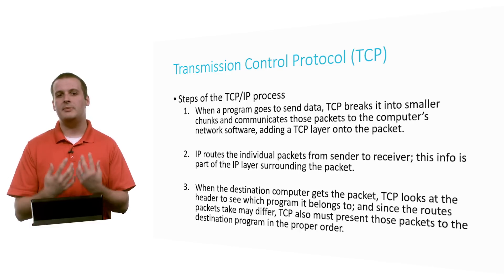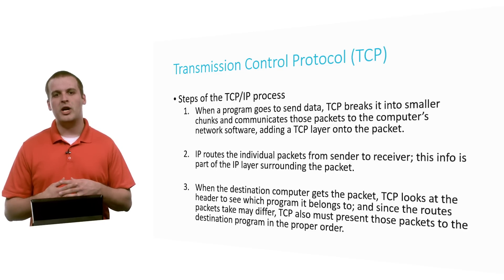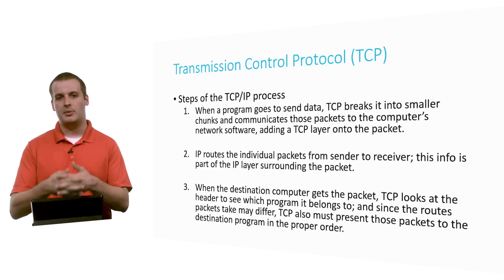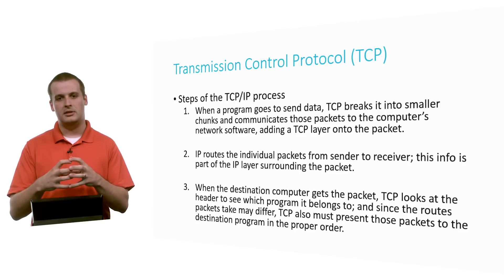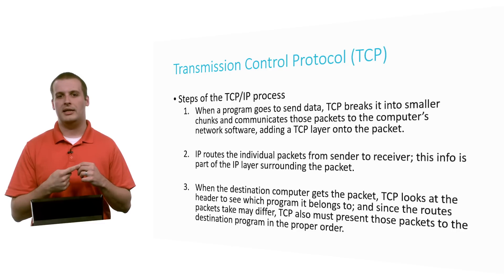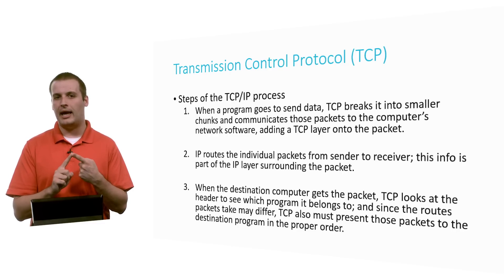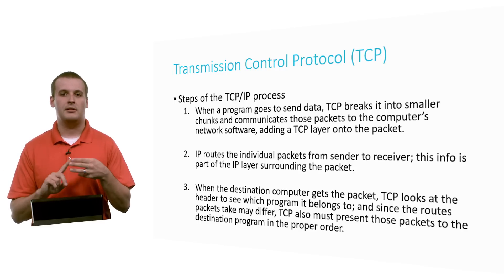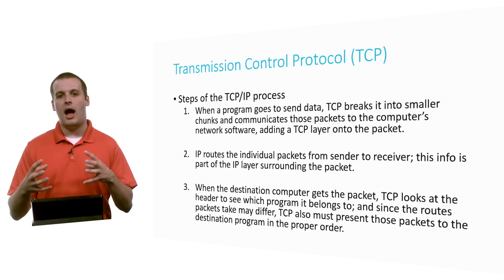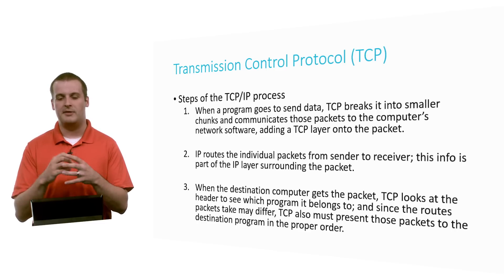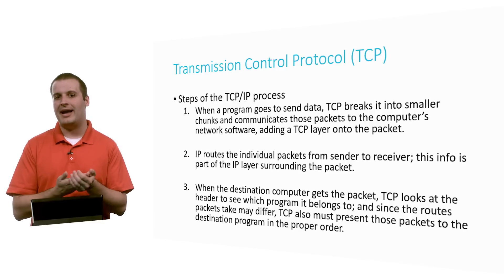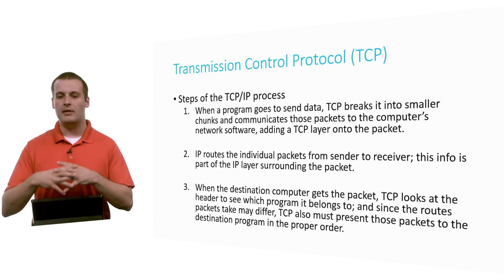So what's the TCP/IP process? When a program wants to send data, TCP helps break it into chunks and communicates those packets to the computer's network software. It takes the data and wraps information around it that indicates what port it's supposed to go to and what order that packet is out of all — for example, packet 1 of 10, 2 of 10, 3 of 10, and so on. IP then gets those data chunks that have been wrapped with TCP and wraps more information about where the packet is supposed to go. We might call this the IP layer surrounding the packet.